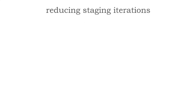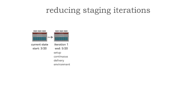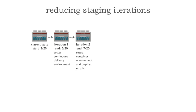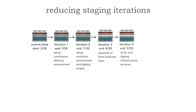Here's a well thought out plan for moving towards microservices. Starting March 20th, iteration one ending May 20th — about two months — is to set up the whole continuous delivery environment. Iteration two is to set up the containerization environment, all deployment scripts and automation — another two months. Iteration three, ending a month later, separates the user interface from the business layer. Iteration four writes dependent infrastructure services — security, logging, auditing — and deploys those. Finally, iteration five we write and deploy our first customer service.